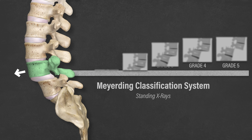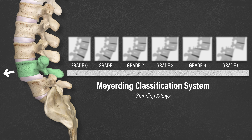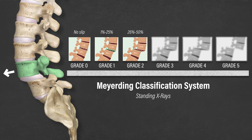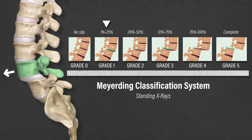The degree of slippage is usually graded using the Meierding classification system based on x-rays in standing. Grade 0: no slip. Grade 1: 1% to 25%. Grade 2: 26% to 50%. Grade 3: 51% to 75%. Grade 4: 76% to 100%. And Grade 5: complete slippage. Of those with spondylolisthesis, Grade 1 is most common.